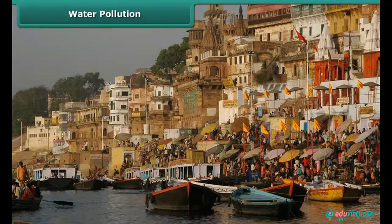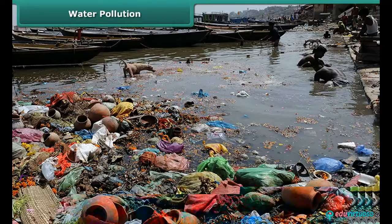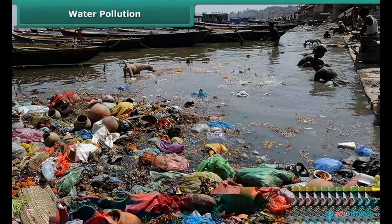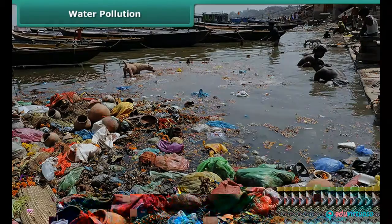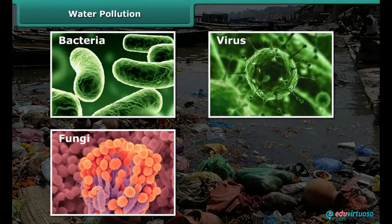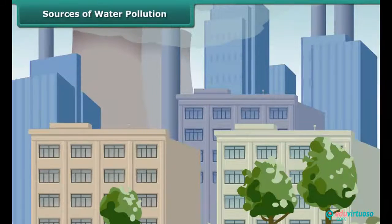Recently, the Worldwide Fund for Nature (WWF) found that Ganga is one of the 10 most polluted rivers in the world. The polluted water of these resources may contain bacteria, viruses, fungi and parasites which cause diseases like cholera, typhoid and jaundice. Let us look at the sources of water pollution.